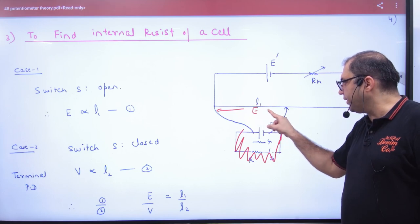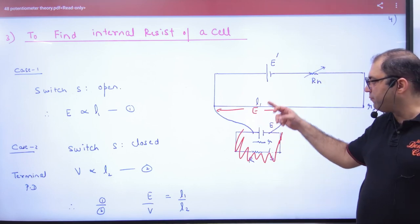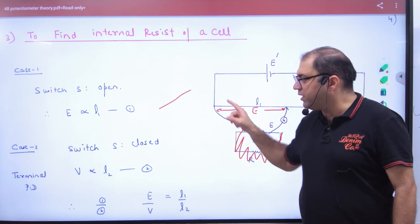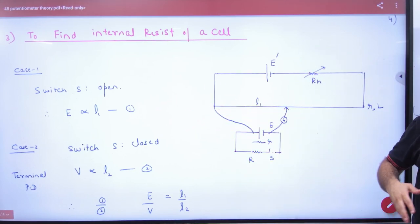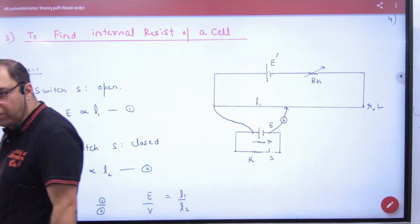So what will this be? E. Potential difference is E. So I can say E proportional to L1. So in the first case, potentiometer has no current, so E proportional to L1.